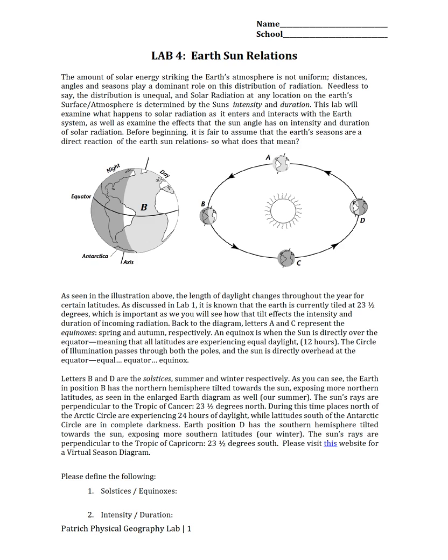Meaning how strong are the rays, which we identify later as incident angles, and looking at how long the length of daylight is observed at that location on the Earth. This lab will examine what happens to solar radiation as it enters and interacts with the Earth's system, as well as examine the effects that the sun angle has on intensity and duration.